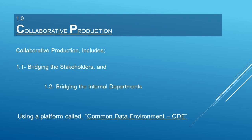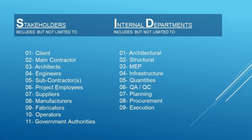Collaborative production includes bridging the stakeholders and bridging the internal departments using a platform called the Common Data Environment, or CDE. Stakeholders may include, but are not limited to: client, main contractor, architects, engineers, subcontractors, project employees, suppliers, manufacturers, fabricators, operators, and government authorities. Internal departments may include architectural, structural, MEP, infrastructure, estimation, quantities, QA/QC, planning, procurement, and execution.